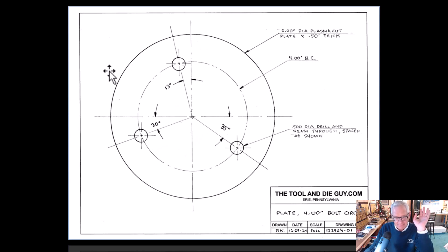We've got a six-inch plasma cut plate, half-inch thick, four-inch BC. That's typically what you'll see—BC means bolt circle, that's the diameter of it. And then half-inch ream, drilling ream through, spaced as shown.